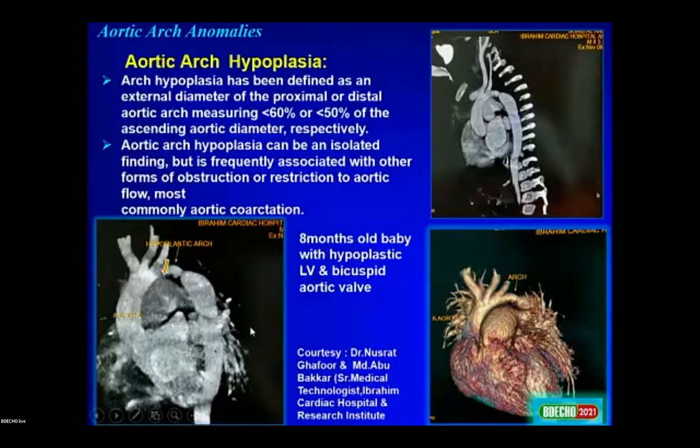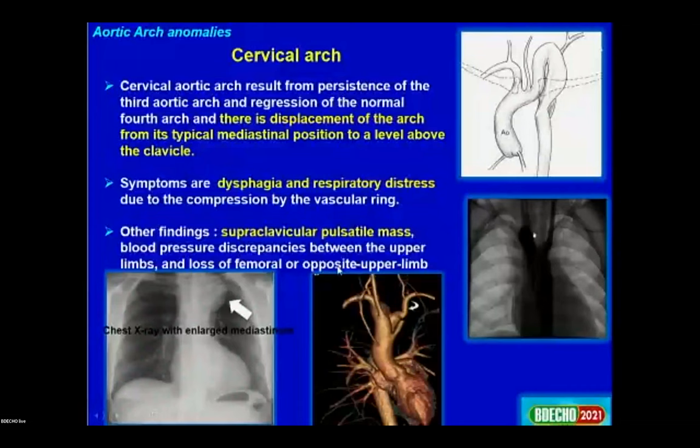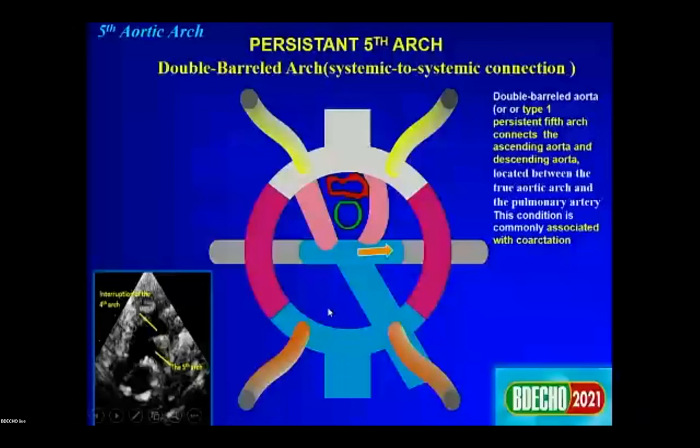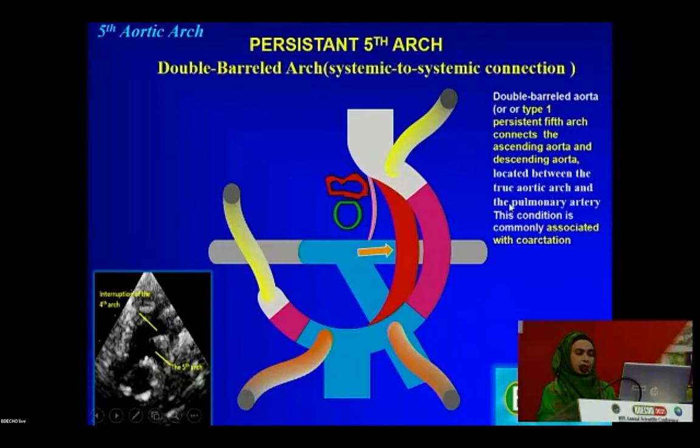Anomalous left pulmonary artery from the right pulmonary artery is also known as pulmonary sling. Cervical arch is due to displacement of the arch above the clavicular level and can cause dysphagia and respiratory distress; X-ray shows enlarged mediastinum. Persistent fifth arch, also known as double-barreled left aortic arch, connects the ascending and descending aorta and can be seen on suprasternal echo between the true arch and pulmonary artery.